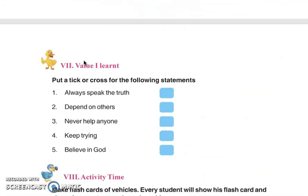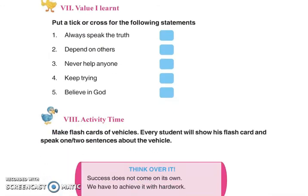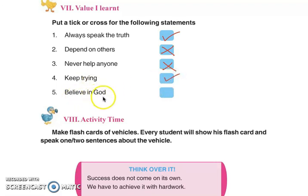Value I learned — put a tick or cross for the following sentences. Always speak the truth — tick, bilkul sahi. Depend on others — cross, bilkul nahi, apni madad khud karo. Never help anyone — cross, ee vhi galt hai, humesha dujyate nirbar karo. Keep trying — bilkul, koshish karde raho. Believe in God — bilkul ji, Rab te vishwaas karo.